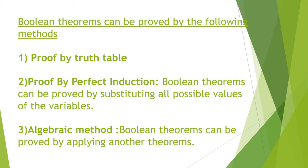Boolean theorems can be proved by proof by truth table, proof by perfect induction, and algebraic method. Last classes we proved some Boolean theorems by proof by truth table and proof by perfect induction. Proof by truth table means using the truth table to prove the theorem; proof by perfect induction means substituting all the possible values of the variables. Today we are discussing the algebraic method, which means theorems are proved by using other theorems.